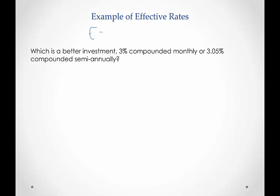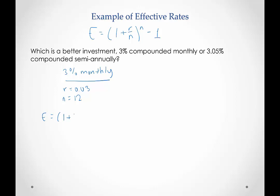The first thing I'm going to do is write the formula: E is equal to 1 plus R over N to the N minus 1. For 3% compounded monthly, the interest rate R is 0.03, and N is 12 since it compounds monthly. Plugging this in, the effective rate would be 1 plus 0.03 over 12 to the 12th, minus 1. Doing this in the calculator, I get 3.042%, which is taking the value and multiplying it by 100.